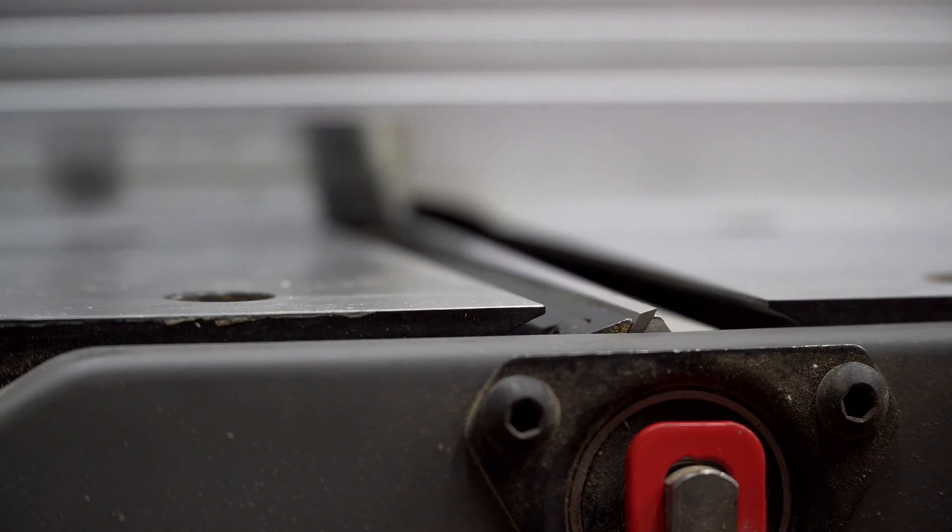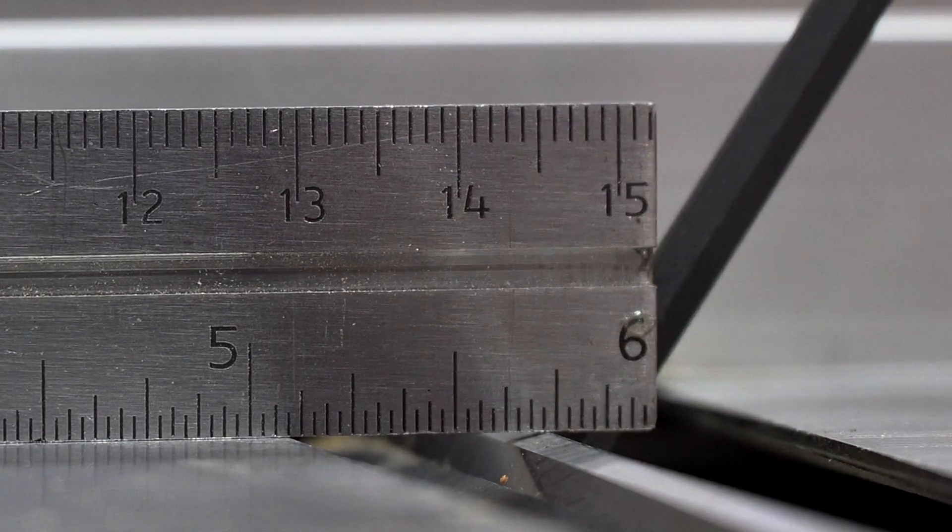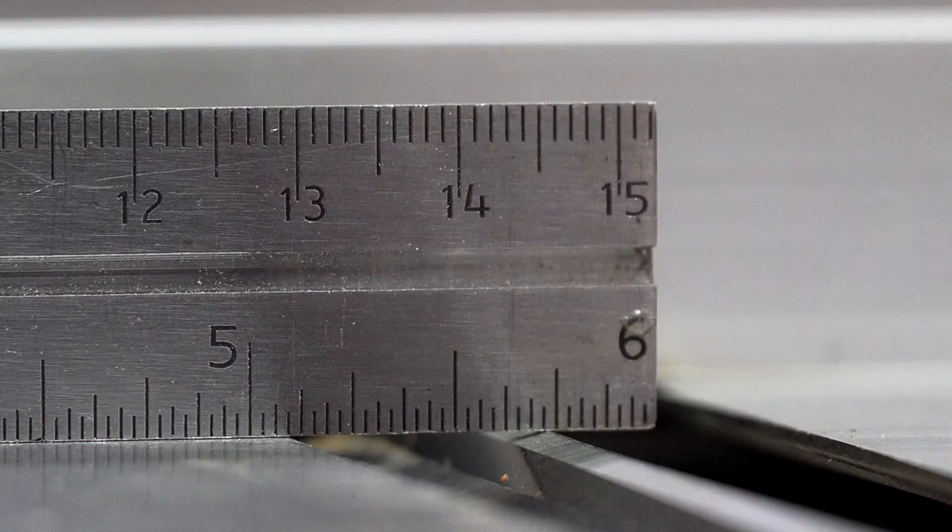Then do the same thing for the other end of the blade. Again, you want it to just make contact. If it lifts the ruler off the outfeed table, you've gone too far and will need to back off just a bit.